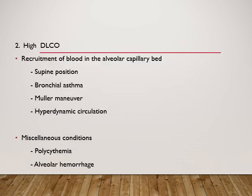Causes of high DLCO include recruitment of blood in the alveolar capillary bed: supine position increases recruitment; bronchial asthma; and Müller's maneuver — inhaling against a closed glottis — which is opposite to the Valsalva maneuver and increases blood at the capillary bed. Hyperdynamic circulation in exercise and fever increases blood supply to pulmonary capillaries, thereby increasing DLCO. Miscellaneous causes include polycythemia, where increased red blood cells provide high hemoglobin concentration for gas exchange, and alveolar hemorrhage, where bleeding into alveolar spaces causes carbon monoxide to rapidly bind to hemoglobin and thereby increases DLCO.